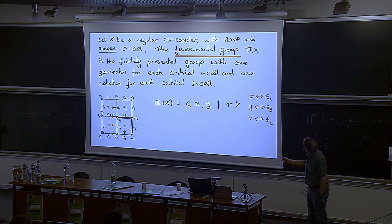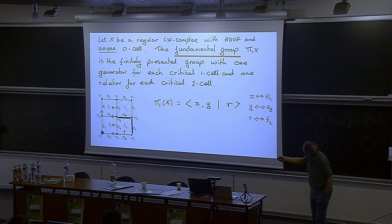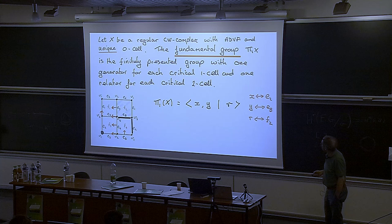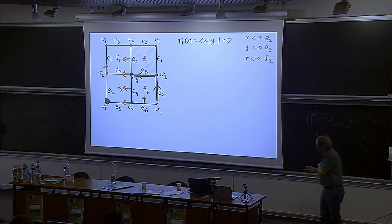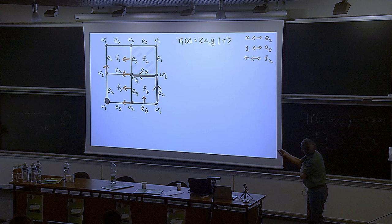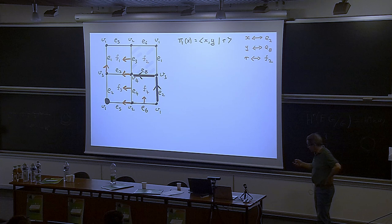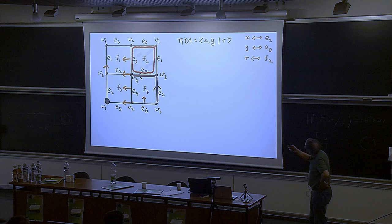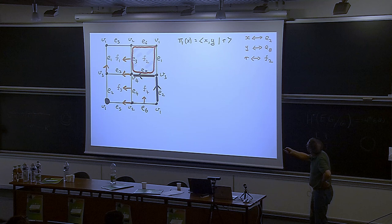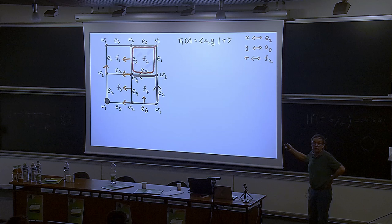There should be one generator in the presentation for each critical one-cell, so there are two critical one-cells giving two generators. There's only one critical two-cell so we'll have one relator, and I have to explain what that relator is. I'm interested in the cell F2 and how it attaches to the one-skeleton. Let me use the arrows of the discrete vector field to see how it attaches.